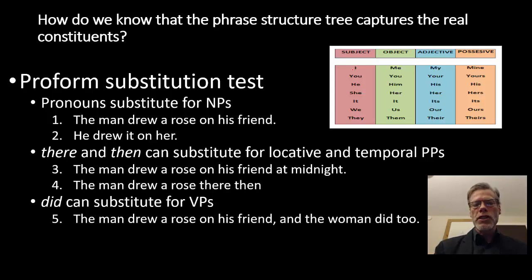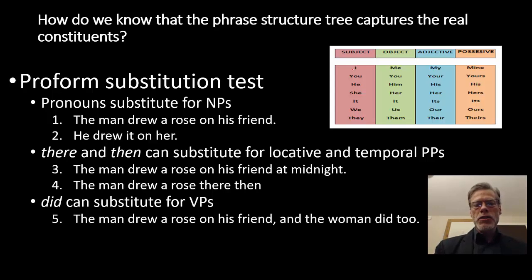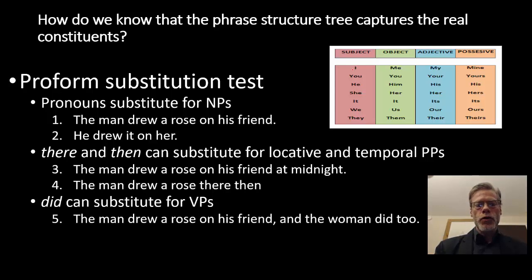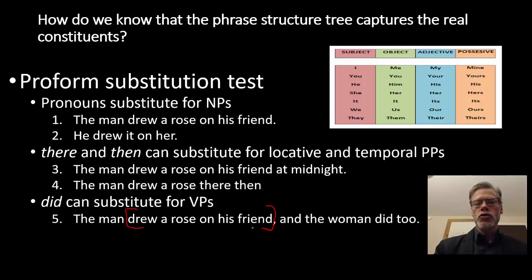We can also get proforms for preposition phrases — pro-PPs. There and then can substitute for locative and temporal PPs. So in 'the man drew a rose on his friend at midnight,' we can substitute on his friend with there and at midnight with then. We can also get pro-VPs: the word do stands in for a verb phrase. For example, 'the man drew a rose on his friend, and the woman did too' — where did stands in for the verb phrase drew a rose on his friend. In that way, we can show that drew a rose on his friend is in fact a verb phrase.